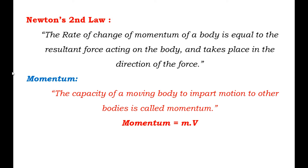The momentum of a moving body is given by the product of mass and velocity of the moving body. So momentum is equal to mass into velocity. The unit for this is kg·m/s.